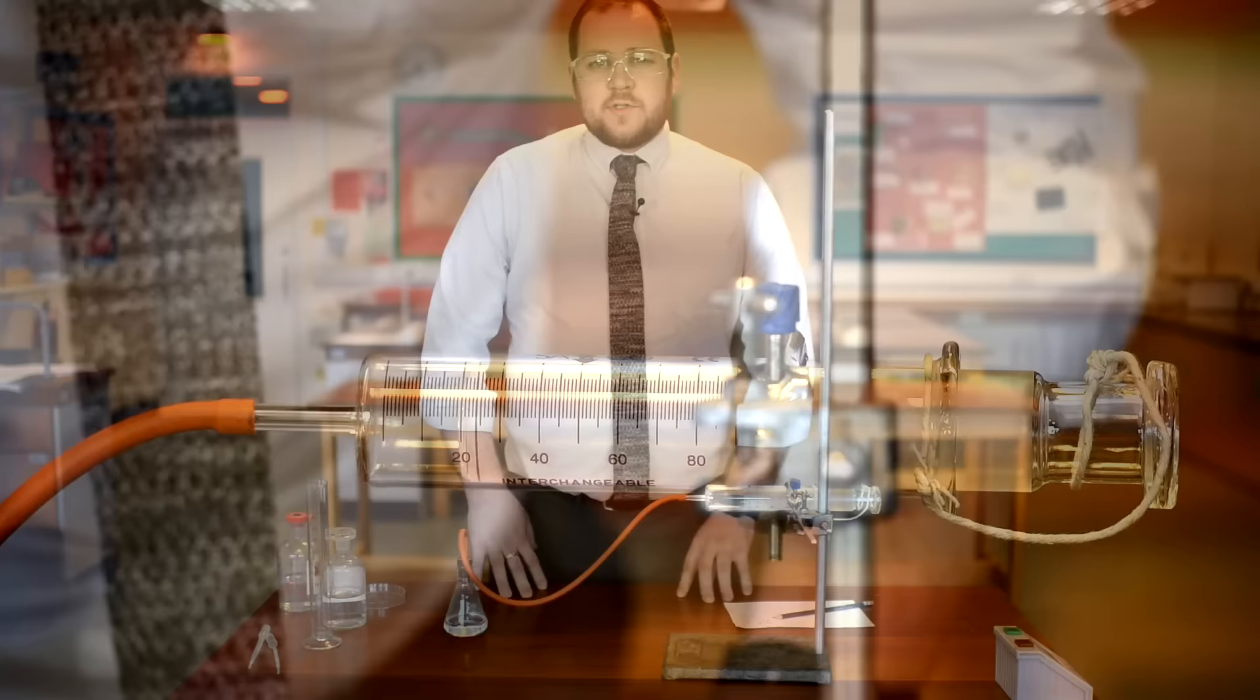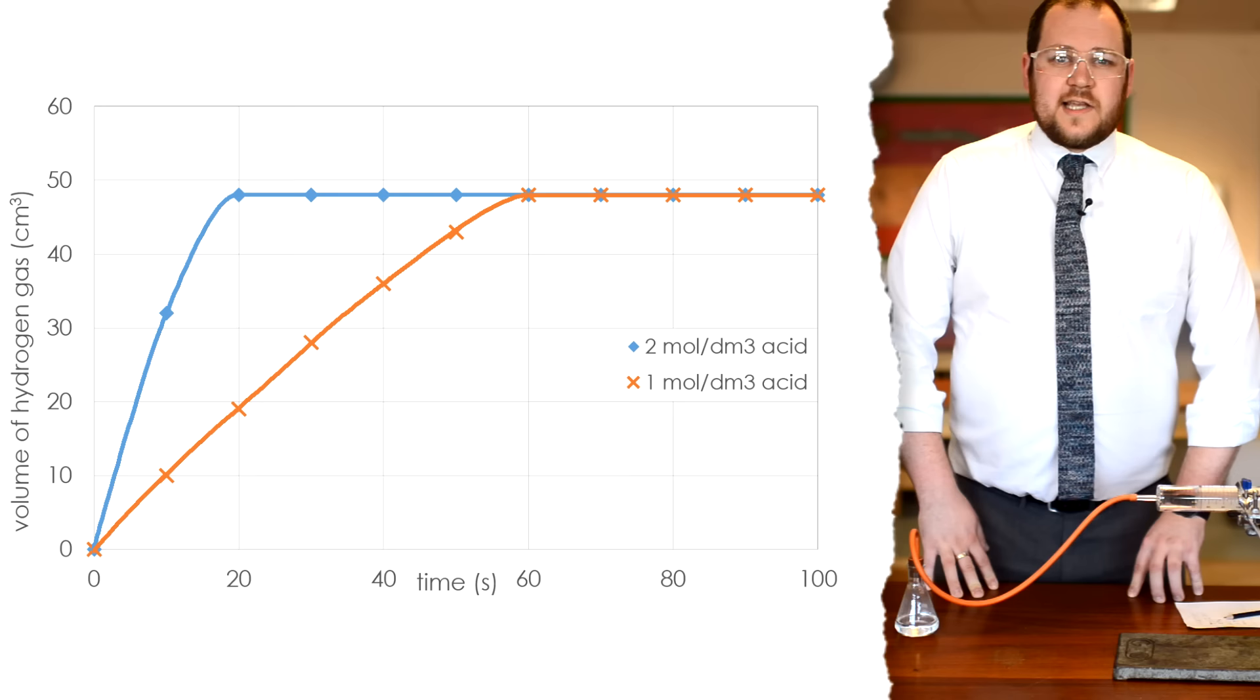Now you've collected results of different concentrations, you're going to draw a graph of your results. On your graph you'll have time along the x-axis in seconds and volume of gas collected every 10 seconds in centimetres cubed on the y-axis.